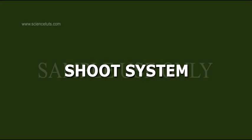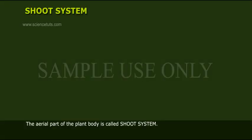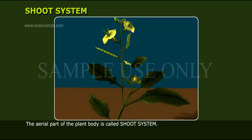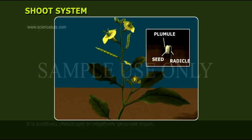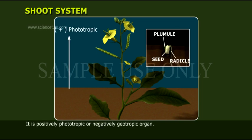The aerial part of the plant body is called the shoot system. It is developed from the plumule of the embryo. It is a positively phototropic or negatively geotropic organ.